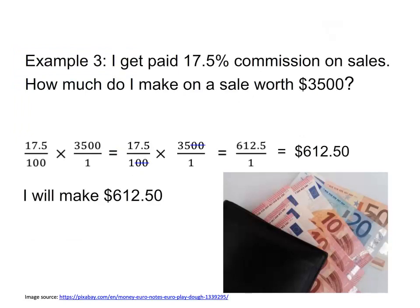Commission paid on a sale is another common application. It is the amount earned on a sales transaction. To find the solution, we need to calculate 17.5% of $3,500.